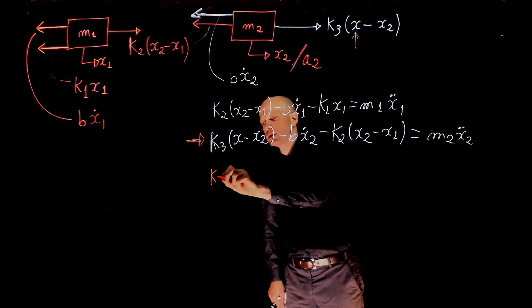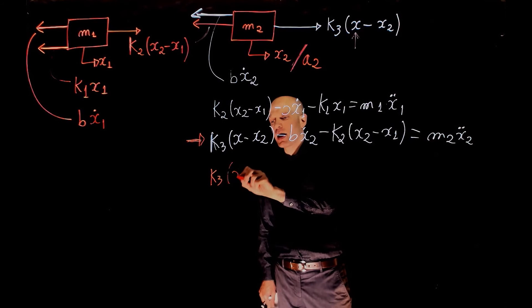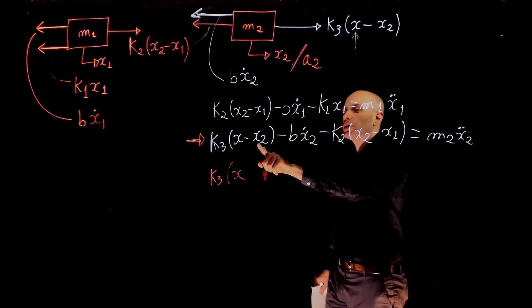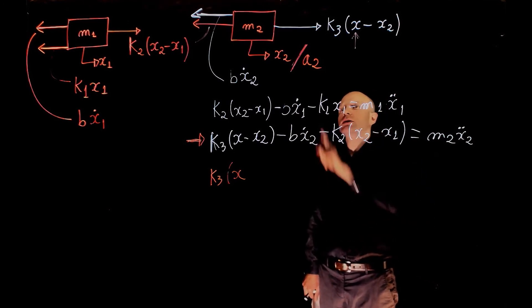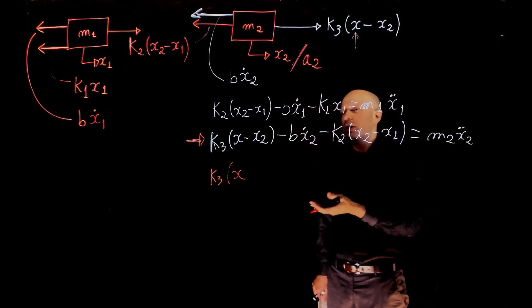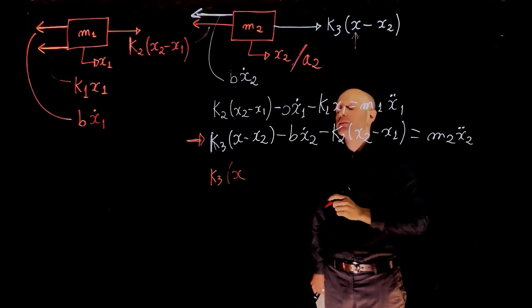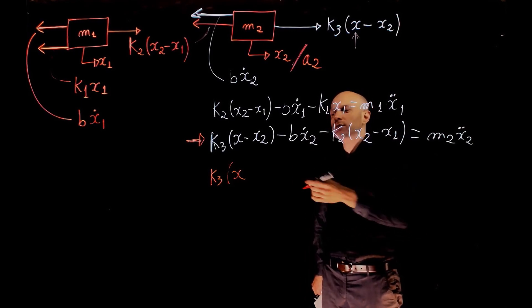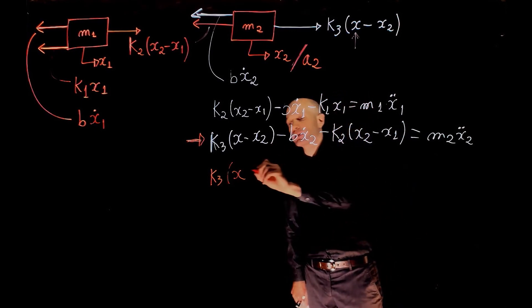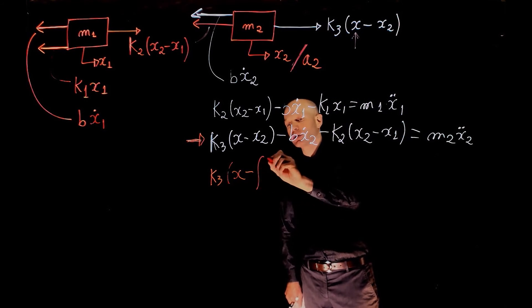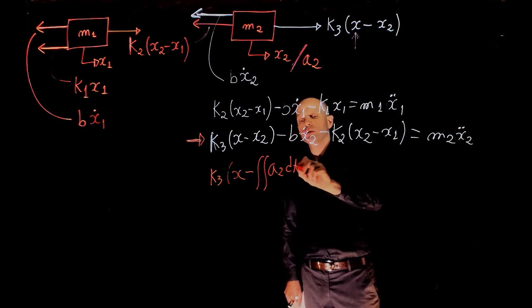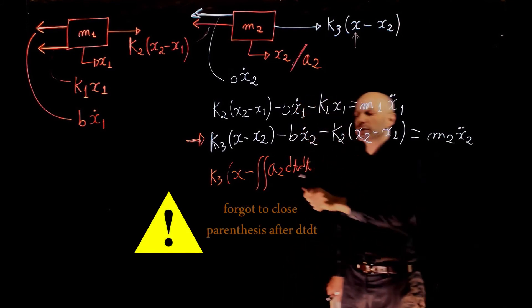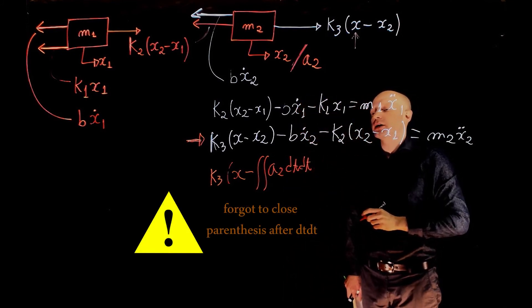Well, this becomes, this is still k3, x doesn't change. Now here we have displacement x2, but we now need to write the displacement as a function of acceleration. What is the relation there? Well, if we integrate the acceleration twice, we get the displacement. So minus the double integral of a2 dt dt, the double integral of the acceleration.